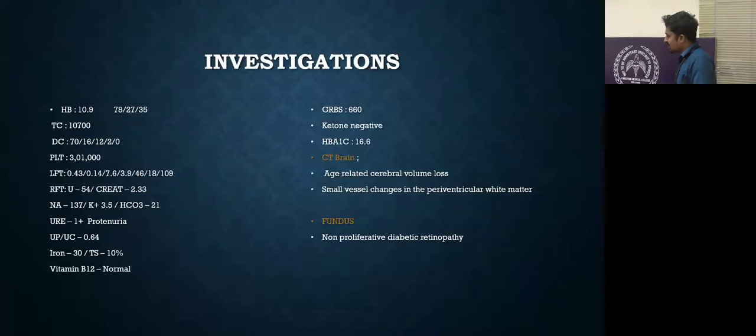Investigations: his hemoglobin was 10.9 with microcytic hypochromic features, and total count of 10,700 with differentials of neutrophilic predominance, and platelet of 3 lakhs. His LFT was normal, with RFT showing urea 54, creatinine 2.33, and sodium electrolytes were normal. Urine routine shows 1+ proteinuria with UPUC of 0.64, and iron studies showed iron deficiency anemia with vitamin B12 normal. His GRBS was 660, where ketones were negative, and HbA1c was 16.6.